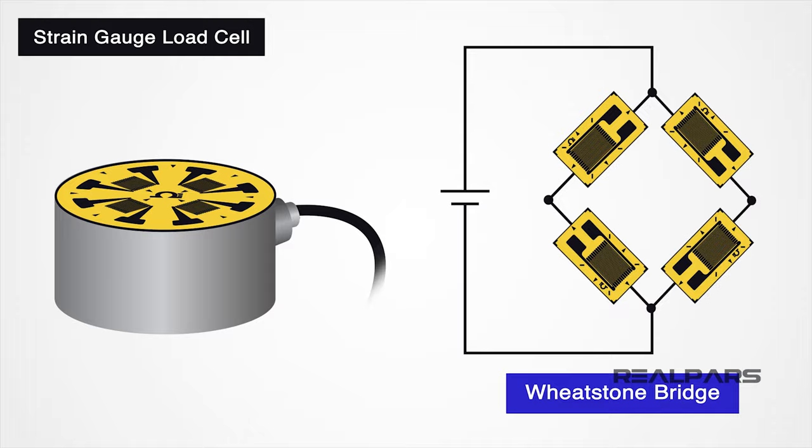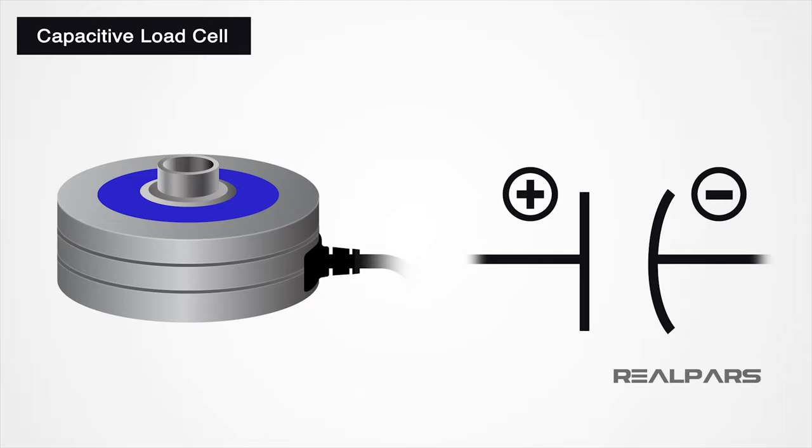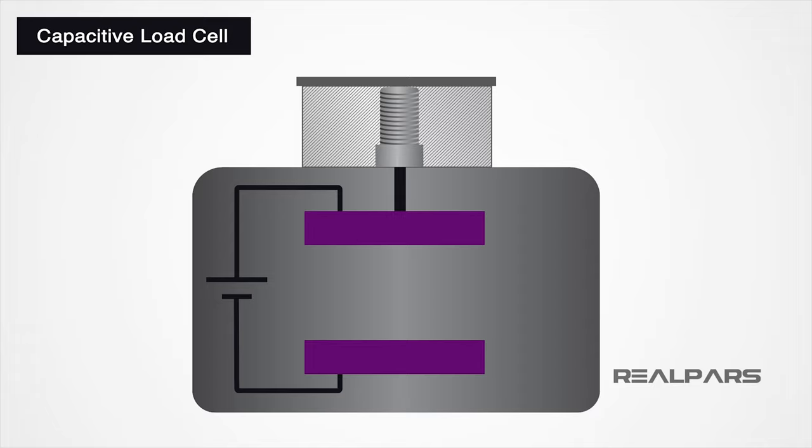The last type of load cell we are going to discuss is a capacitive load cell. Capacitive load cells work on the principle of capacitance, which is the ability of a system to store a charge. The load cell is made up of two flat plates parallel to each other. The plates will have a current applied to them, and once the charge is stable, it gets stored between the plates.